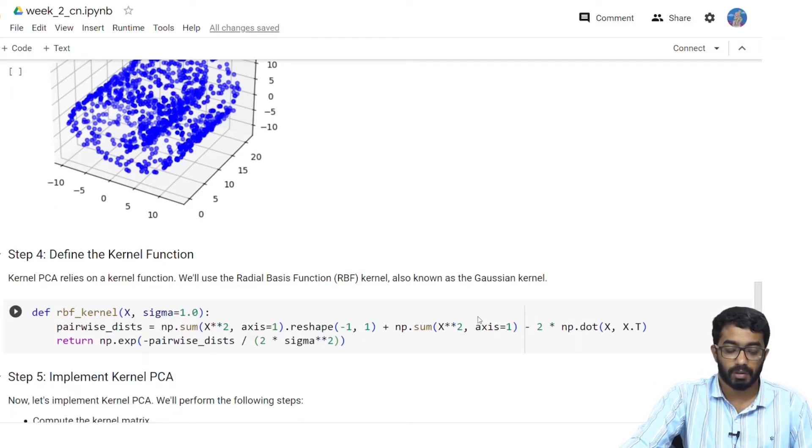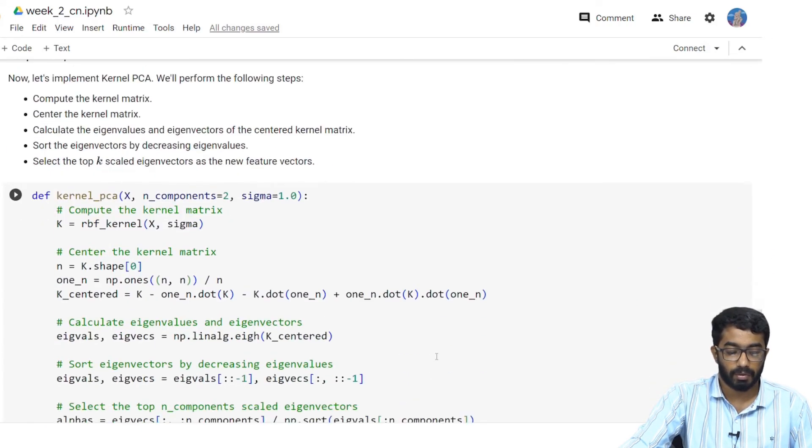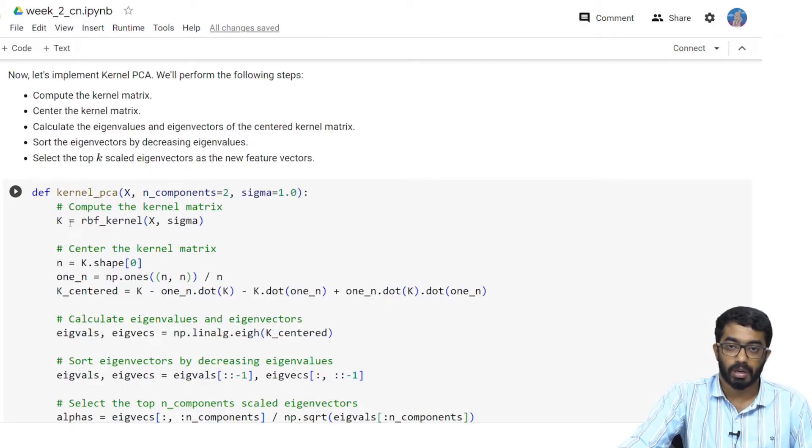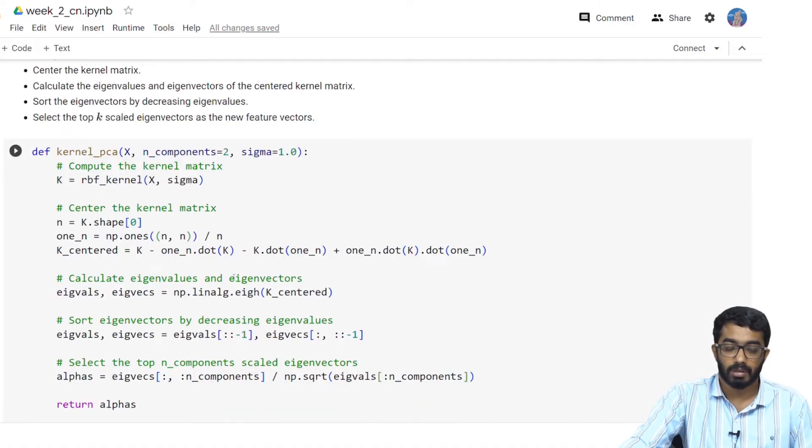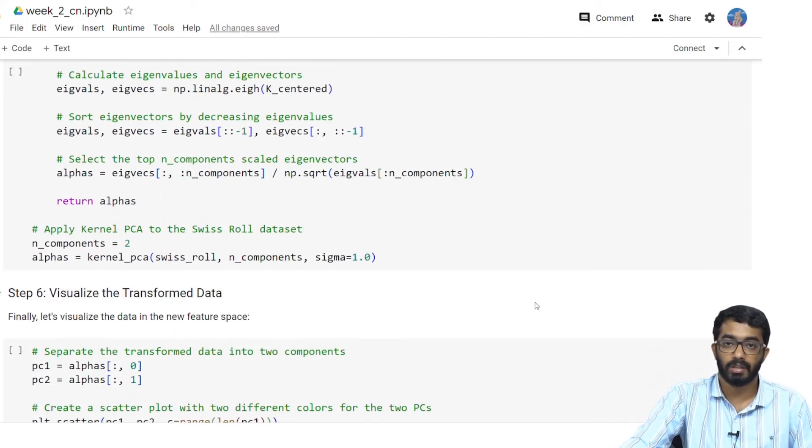Now let us define first the kernel function. We use the RBF kernel on this data set and as you can see this is the RBF kernel. Now let us implement the kernel PCA itself. In the kernel PCA function we first try to get the kernel itself using the RBF kernel and then we find the centered K. Finally the eigenvalues and eigenvectors are given by numpy.linalg.eig method and finally we get the scaled alphas. We just take the first two components to represent our data set.